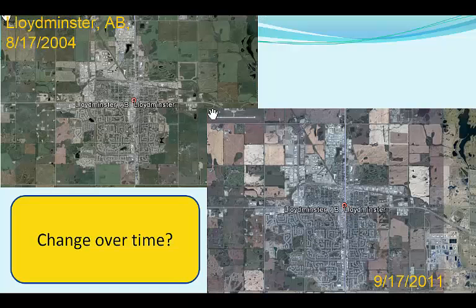Studying change — for example, urban expansion or deforestation or cropland expansion over several decades — requires taking additional factors into consideration. To illustrate these issues, I'll discuss a study I'm currently working on of the growth since the early 1980s of the city of Lloydminster, a city that lies on the border between two Canadian provinces, Alberta and Saskatchewan, that have different policies influencing the oil and gas economy, here illustrated with two Google Earth screenshots.